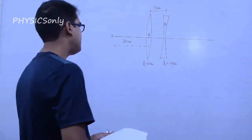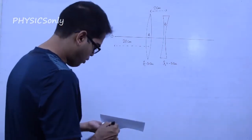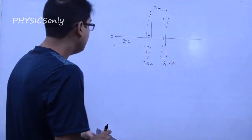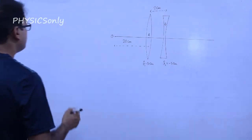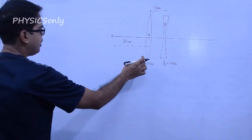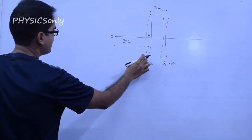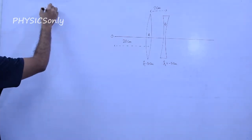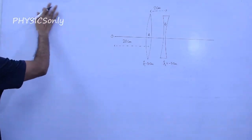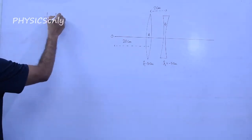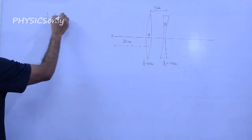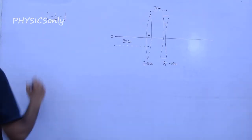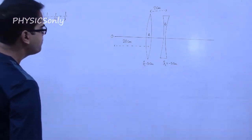The lens formula relates object distance, image distance, and focal length. We will use this for the first lens. The formula is: 1/v minus 1/u equals 1/f.